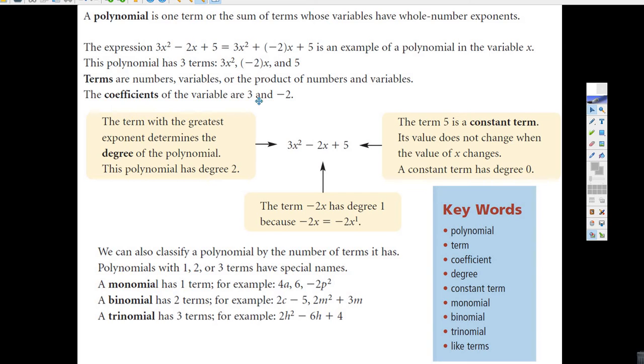And 5 is called the constant term, the constant term. See, that's real important. We say that minus 2x has a degree of 1. The 5 has a degree of 0. And 3x squared has a degree of 2. We like to put it in the proper order. We put the leading exponent first, and that's kind of a big deal, too.